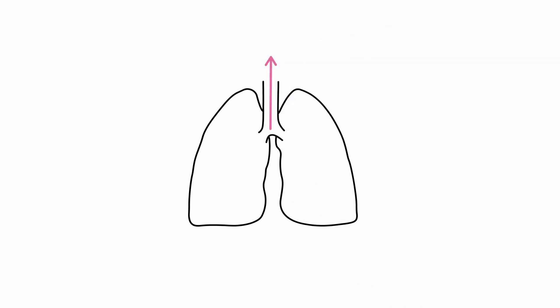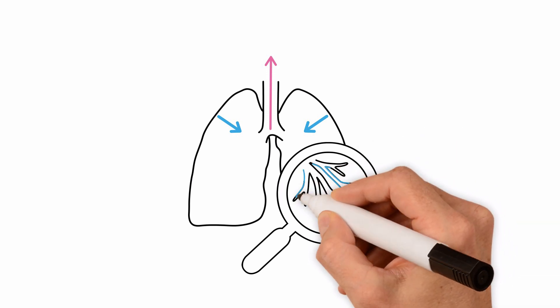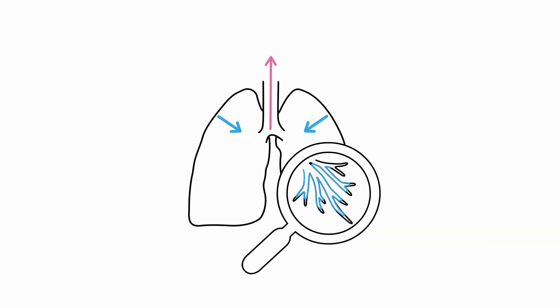During exhalation, the decreased elastic recoil of the lung and narrowing of small airways cause closure of small airways at the bases of the lungs. As this happens, the contribution of gas from basilar alveoli to the expired gas concentration decreases.